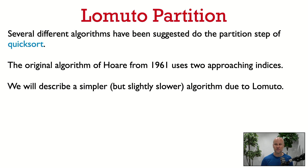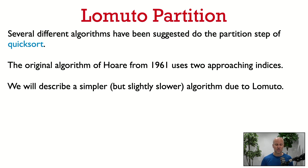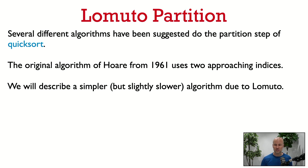Hoare, the original inventor of quicksort, back in 1961, proposed a partition function based on maintaining two indices — one starting at the beginning of the vector, one starting at the end — and as the algorithm progressed, these indices approached each other. This algorithm has good performance, but it can be slightly subtle to implement. To make the presentation here easier, we're going to use a simpler algorithm due to Lomuto.